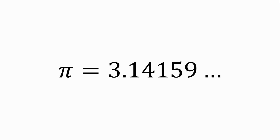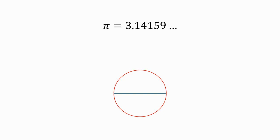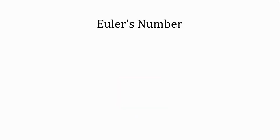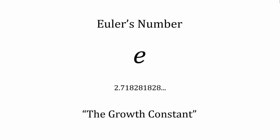Pi, as a constant, is not terribly difficult to understand because it's defined by geometry — the ratio between the circumference and the diameter of a circle. But there's another super vital constant in math, Euler's number, or e, which is 2.71828 and it goes on. Unlike pi, e isn't defined by geometry, but by growth.